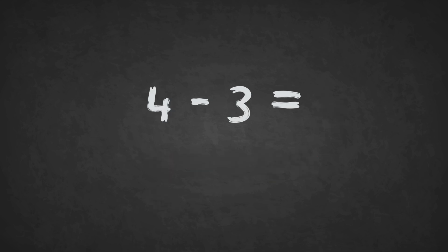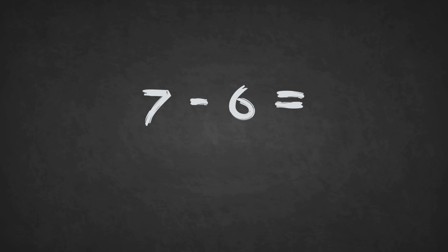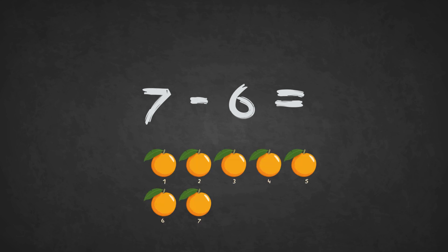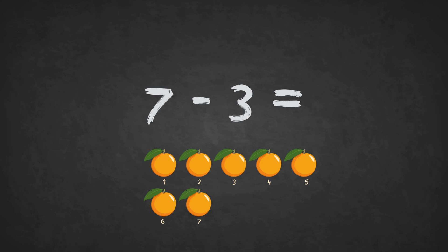4 minus 3 equals 1. The answer is 1. 7 minus 6 equals 1. The answer is 1. 7 minus 3 equals 1, 2, 3, 4. The answer is 4.